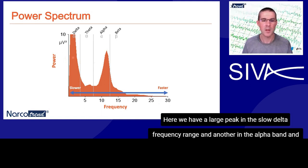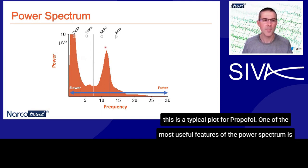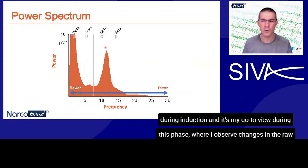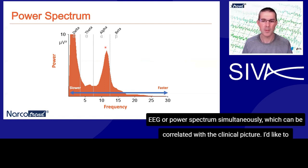Here we have a large peak in the slow delta frequency range and another in the alpha band, and this is a typical plot for propofol. One of the most useful features of the power spectrum is that it's rapidly processed and useful for near real-time monitoring. I find it useful during induction and it's my go-to view during this phase, where I observe changes in the raw EEG and power spectrum simultaneously, which can be correlated with the clinical picture.